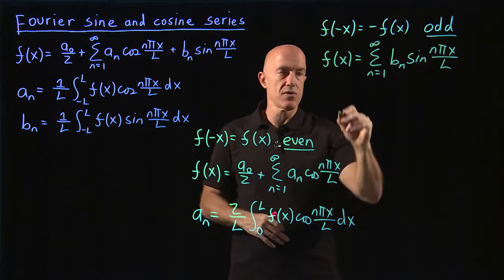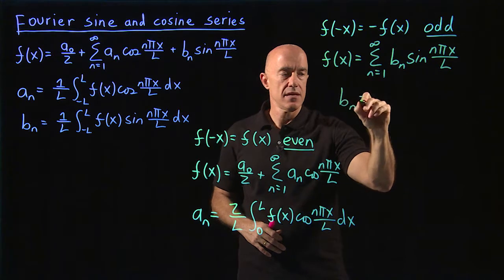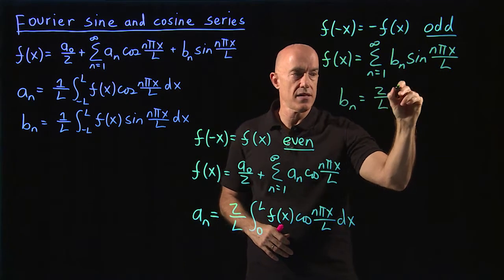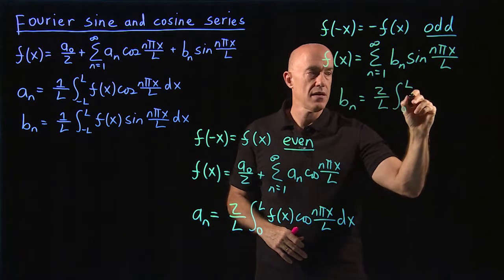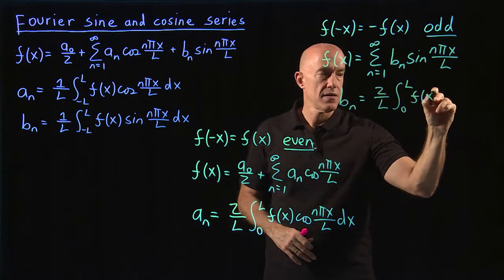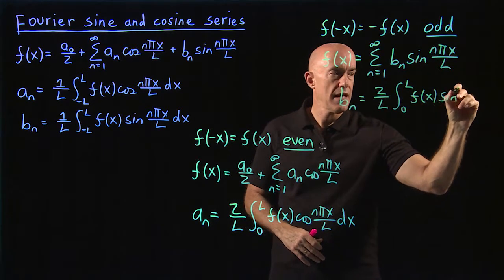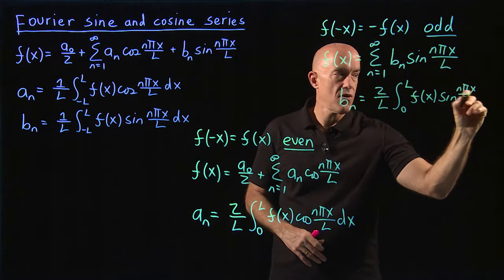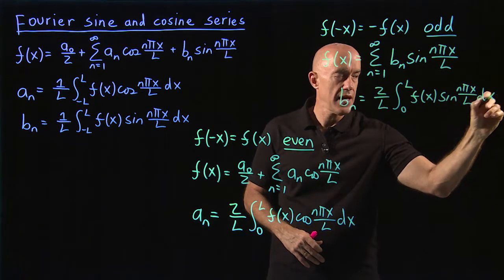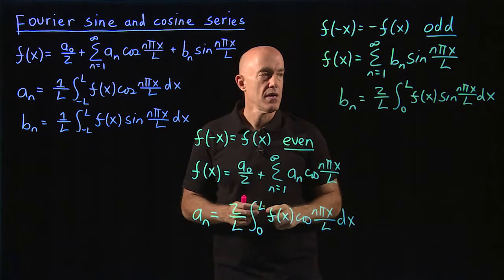And in a similar way, the b sub n is equal to 2 over L times the integral from 0 to L of f of x sine n pi x over L dx.